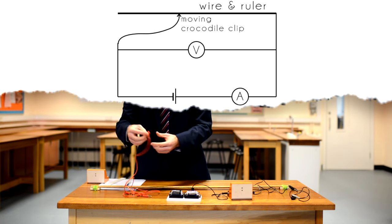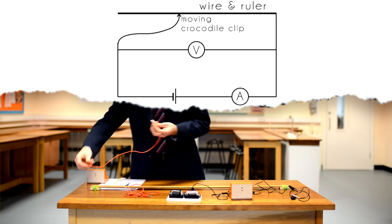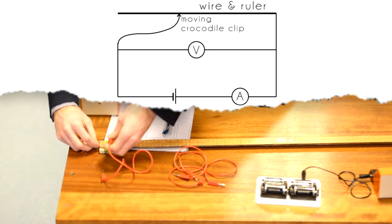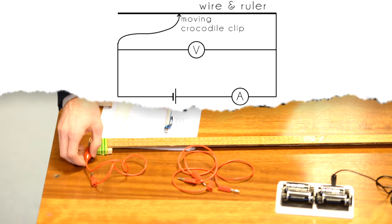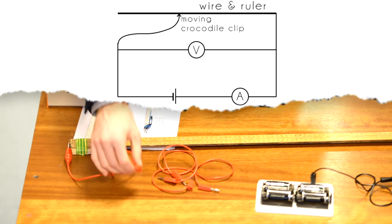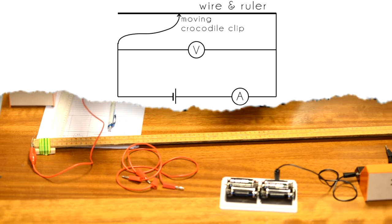Next up at the other end take the second crocodile clip and I'm going to clip this onto the one meter end of the meter ruler to start with, but this crocodile clip is going to move during the course of the experiment so that we can test different lengths of wire.